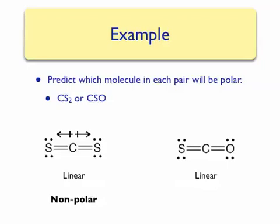However, if we look at the CSO molecule, we find that the dipole moment arrows are not the same length. This is because a carbon-oxygen bond is much more polar than a carbon-sulfur bond. When we add up the dipole moment arrows, we get an overall dipole moment pointing towards the oxygen end of the molecule. Therefore, CSO is a polar molecule. The reason CSO is polar is mainly due to the presence of a different type of bond, since both molecules have the same molecular geometry.